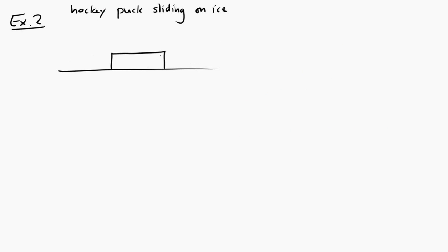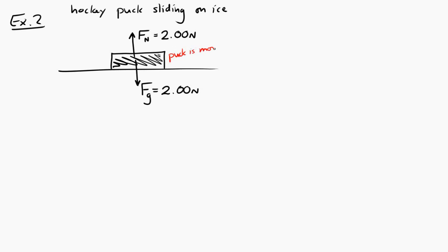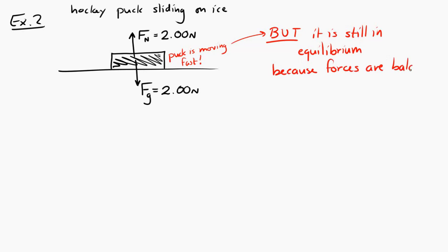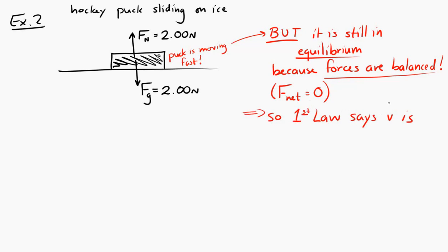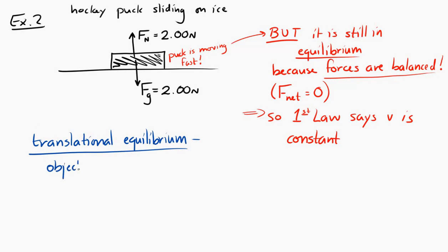Now consider a hockey puck sliding across very slick ice. The puck feels a gravitational force of two newtons downward and a normal force of two newtons upward. Even though the puck is moving, it is in equilibrium because the forces are balanced and the net force equals zero, so its velocity will be constant. This situation — where an object is moving but in equilibrium — has a special term called translational equilibrium, meaning the object moves at a constant velocity.